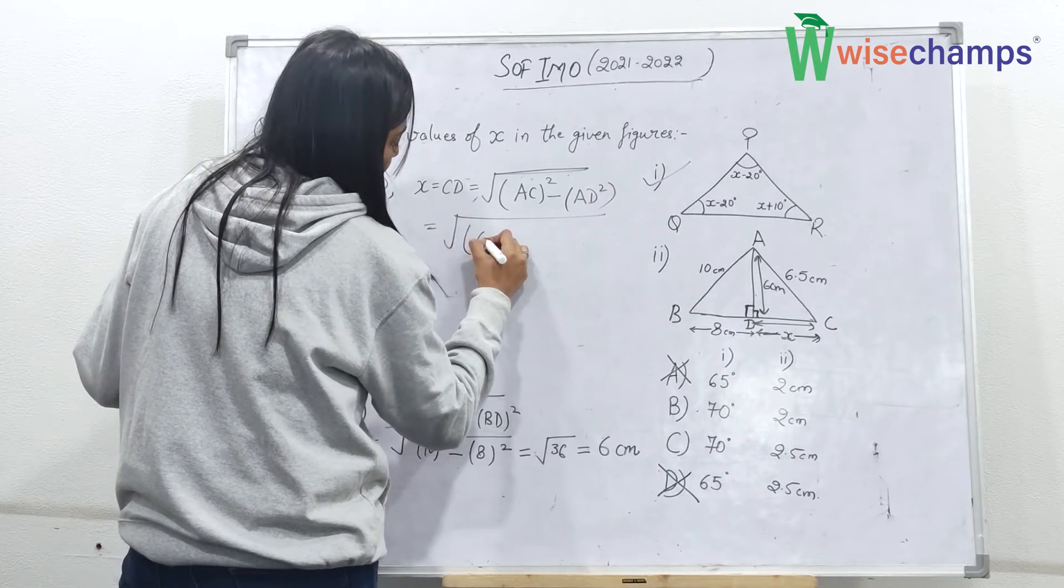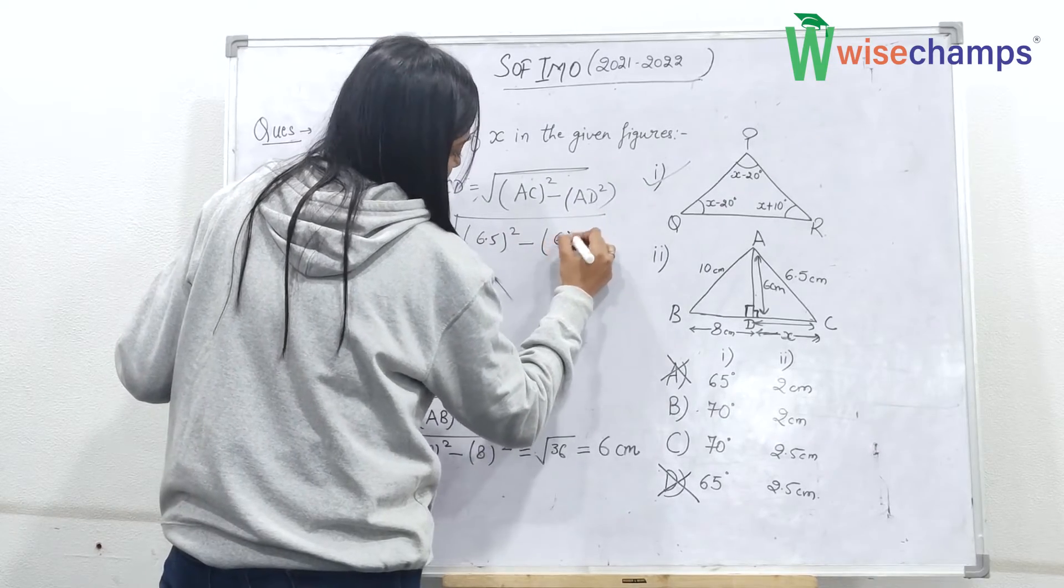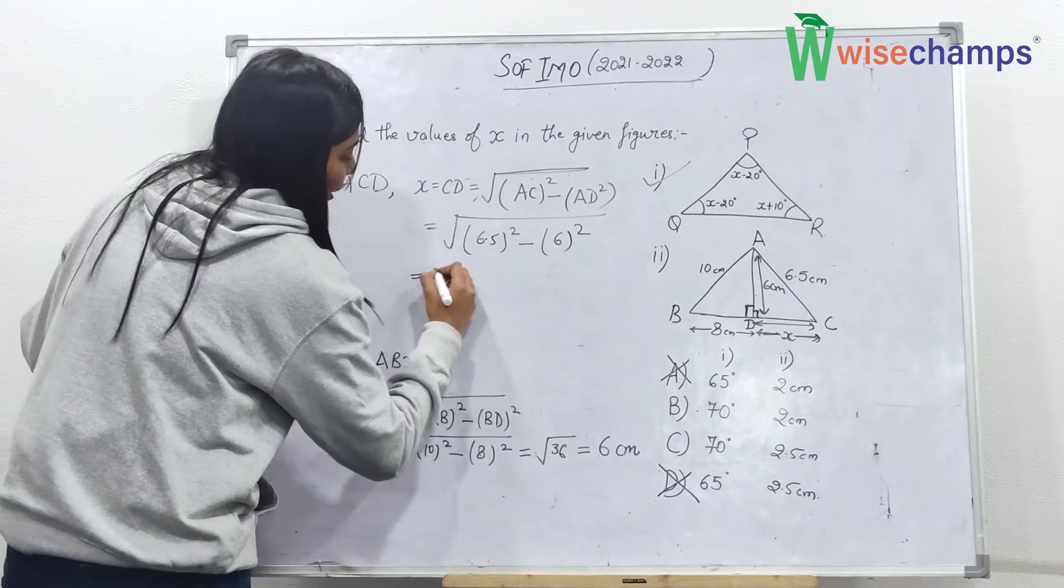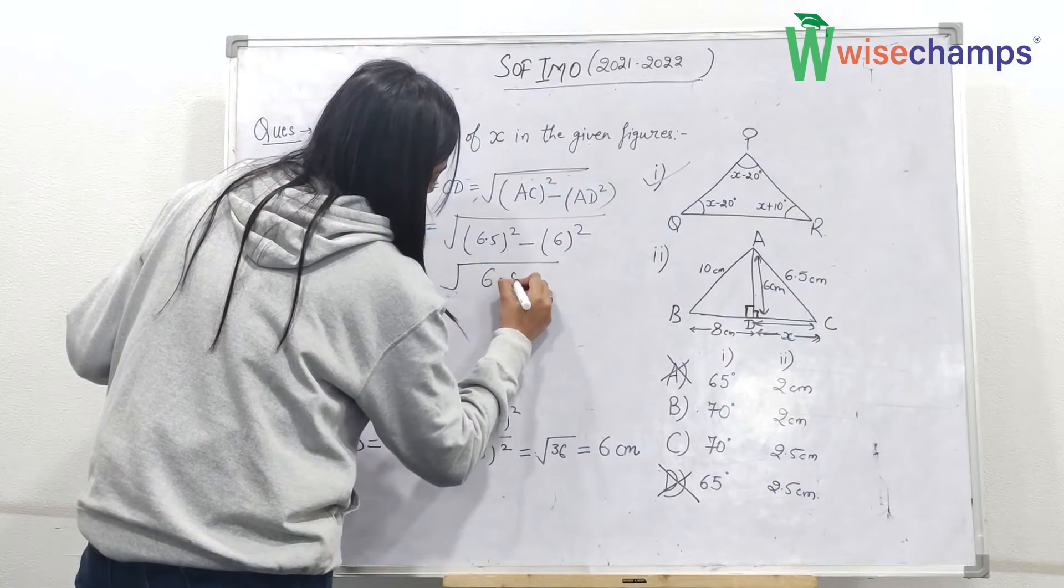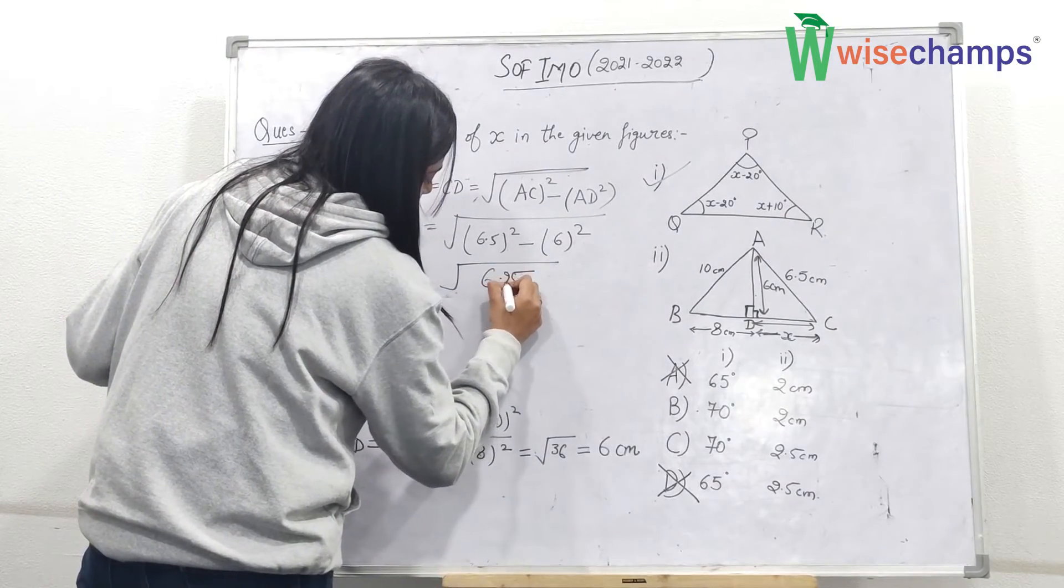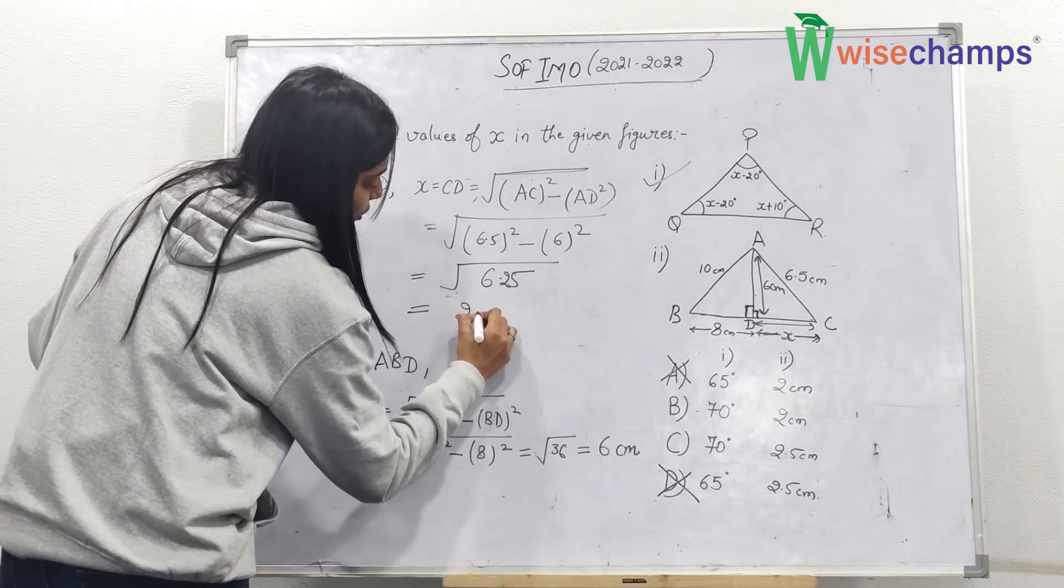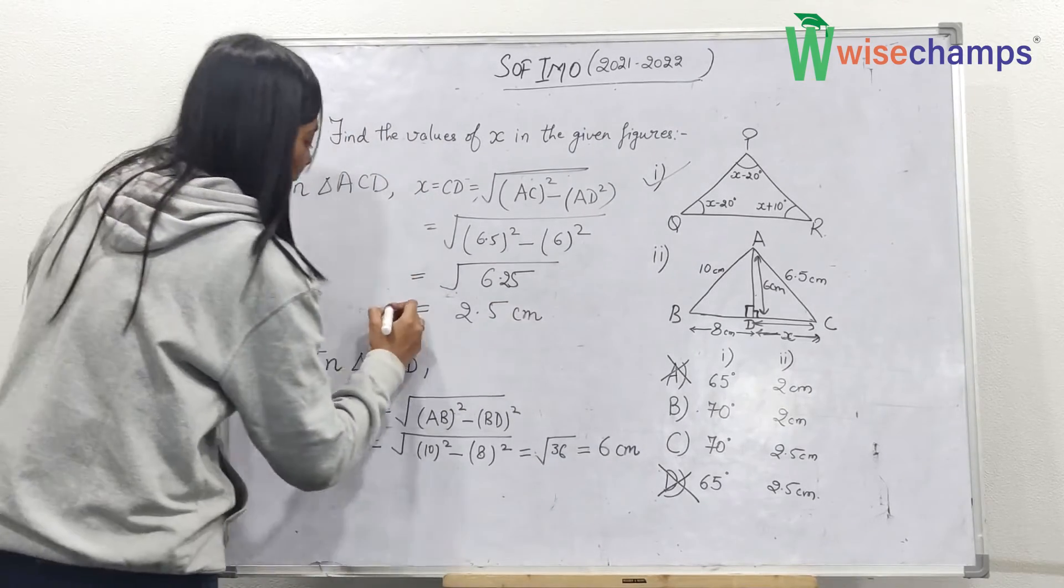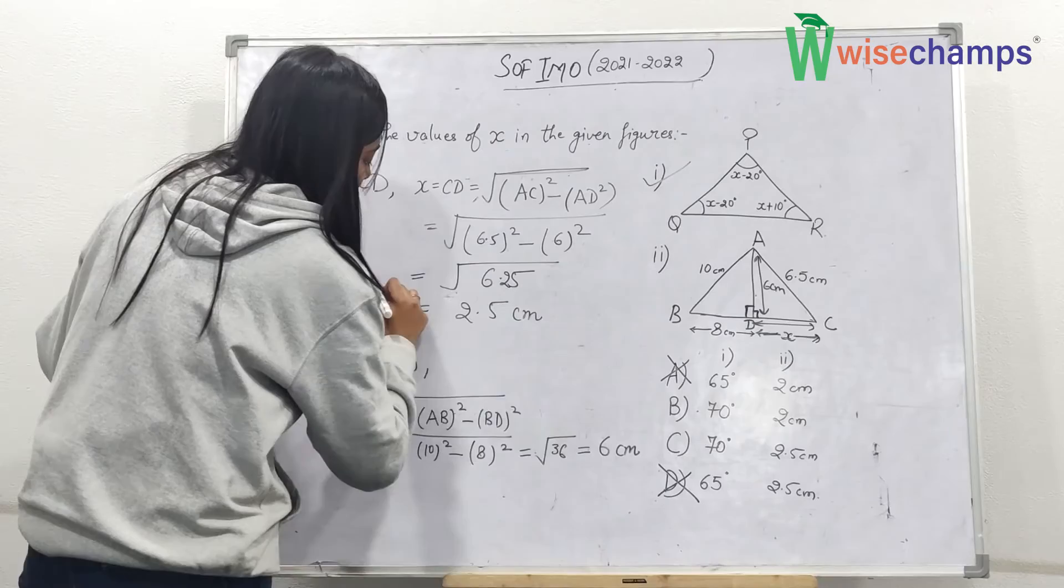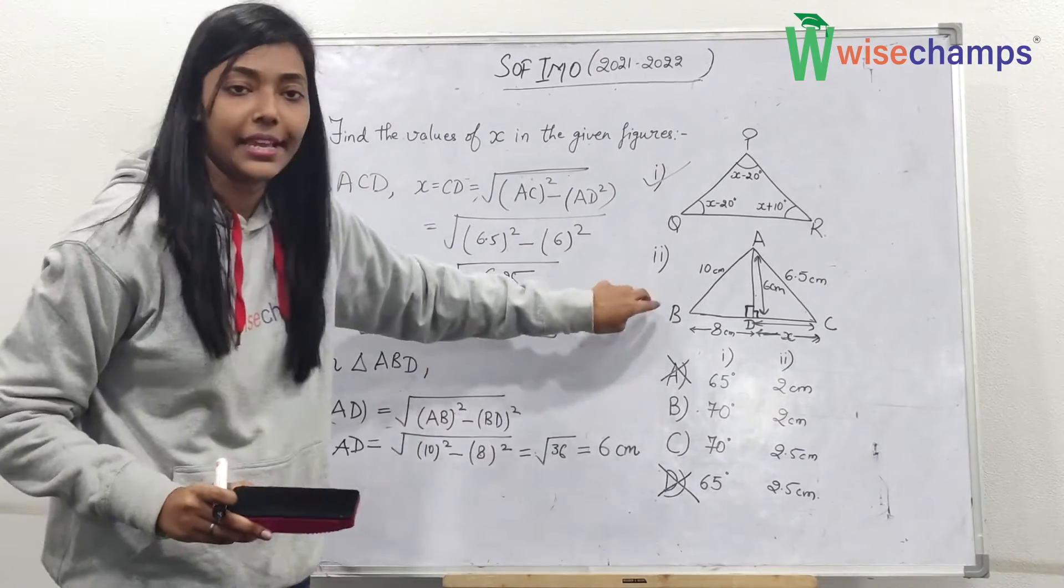So here you will put the values. AC is 6.5 square minus 6 square. So if you will solve this value you will get 6.25, and the answer would be 2.5 centimeters when you solve the square root. So the value of X is 2.5 centimeters in the second figure.